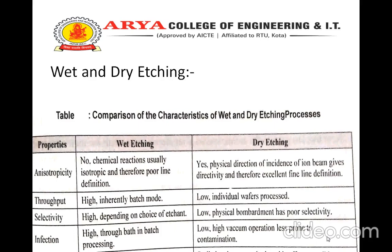Comparison of the characteristics of wet and dry etching. Anisotropy: in wet etching, there is no chemical anisotropy — usually isotropic and therefore poor line definition. In dry etching, yes — the physical direction of incidence of the ion beam gives directivity and therefore excellent fine line definition. Throughput: in wet etching, high — inherently a batch process. In dry etching, low — individual wafer process. Selectivity: in wet etching, high, depending on choice of etchant. In dry etching, low — physical bombardment gives low selectivity. Contamination: in wet etching, high through wet batch processing. In dry etching, low — high vacuum operation but prone to contamination.